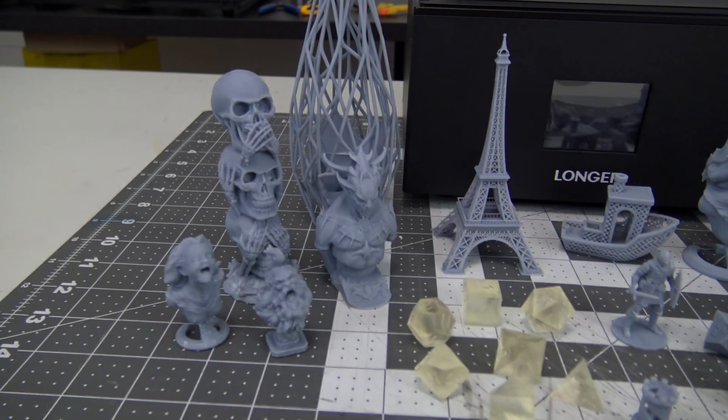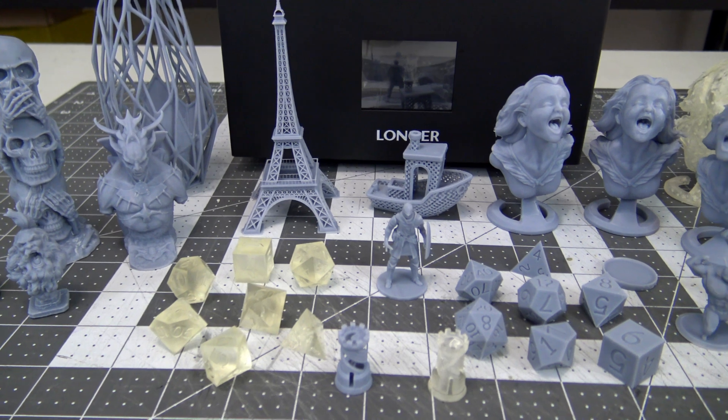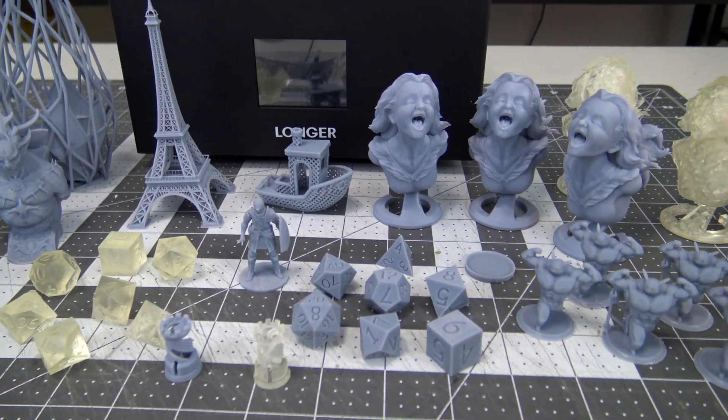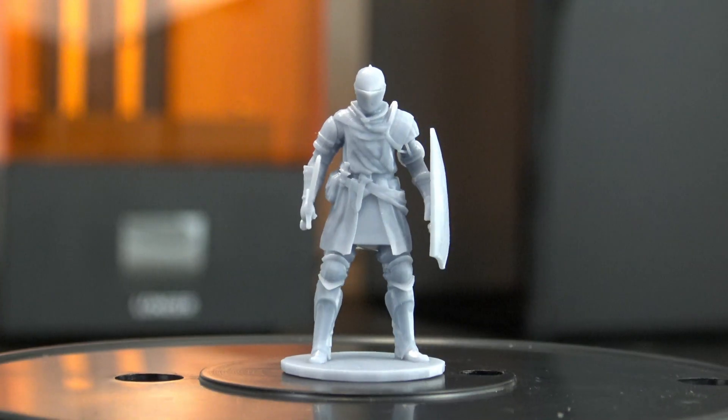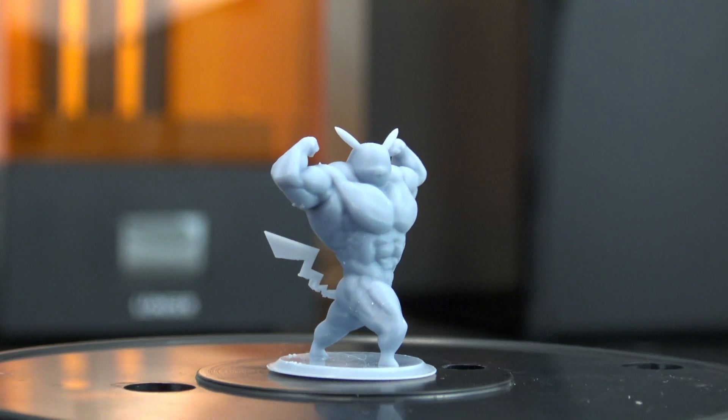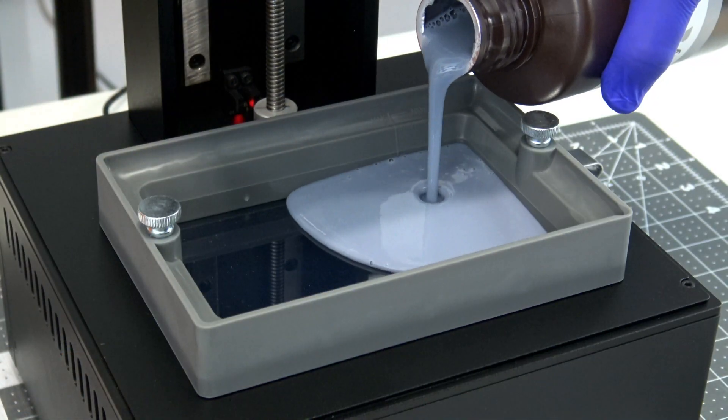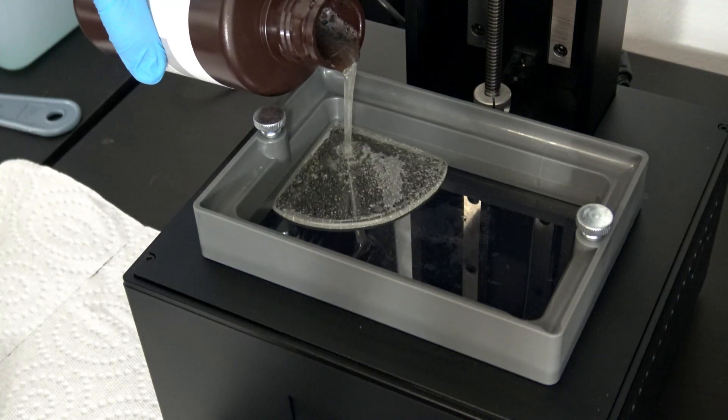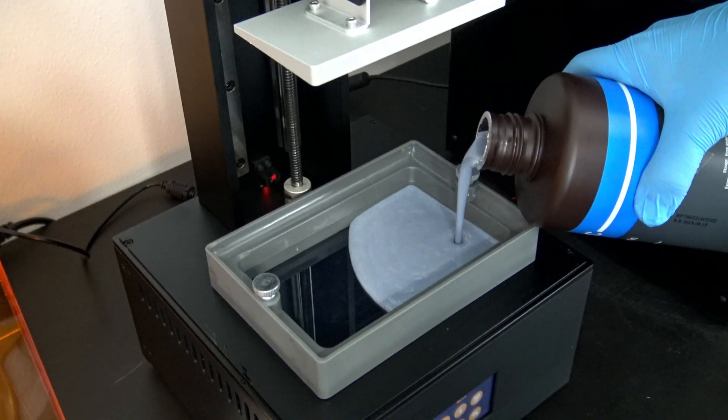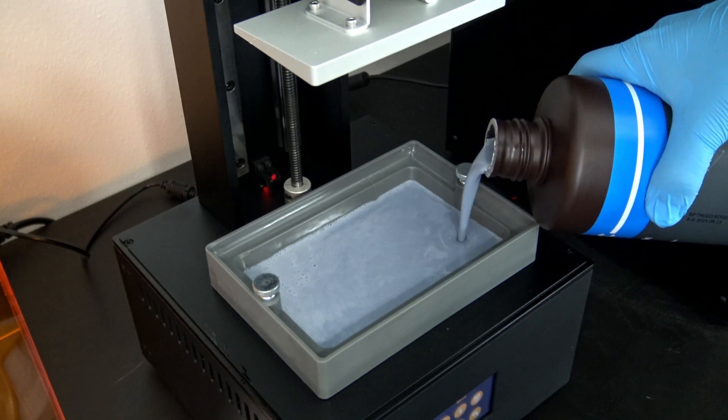Each print tells the same story. The Longer Orange 4K produces very high detailed prints. Whether you are printing a single small object at a time, or packing the build plate to the brim, it was a very consistent printer. Miniatures, dice, and even buff Pikachus didn't phase this machine. It even handled multiple brands and colors of resin. I tried Elegoo Grey, Elegoo Clear, and Anycubic Grey with no issues. The resin vat was easy to clean with isopropyl alcohol, and made switching resins relatively easy. You could also purchase multiple vats and swap them out as needed.